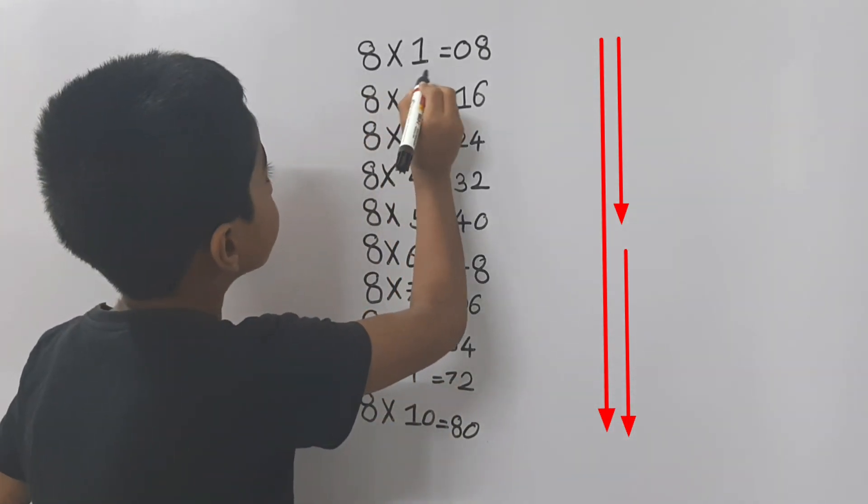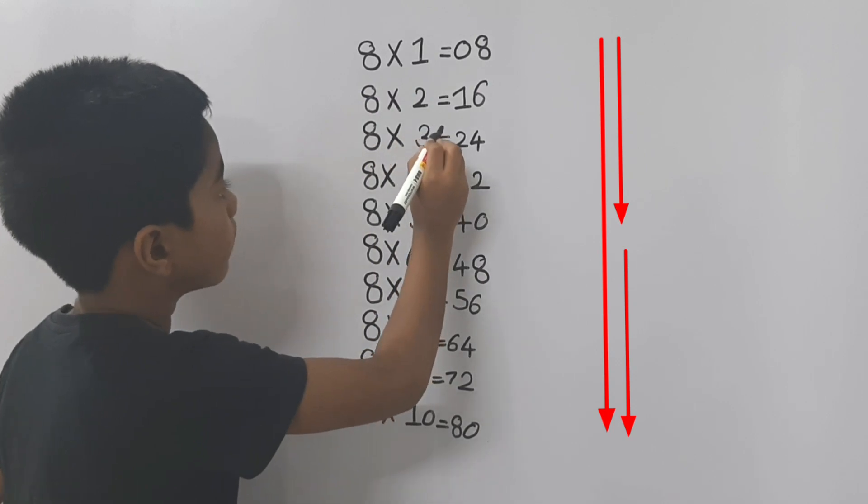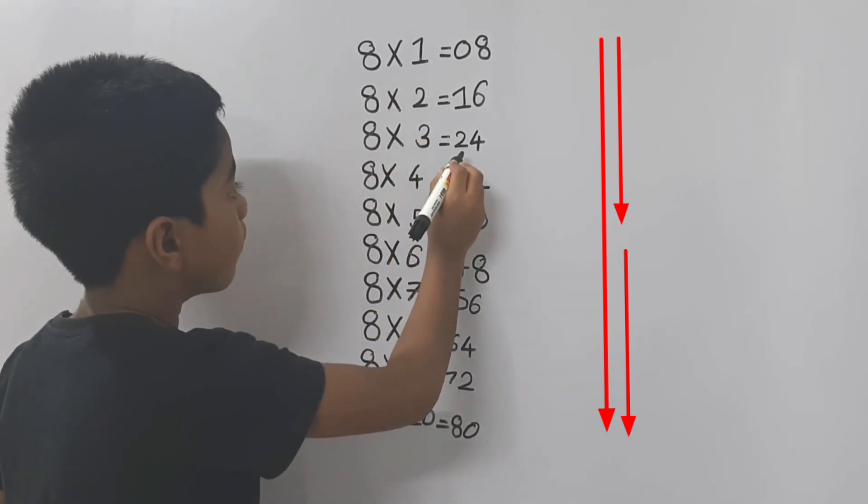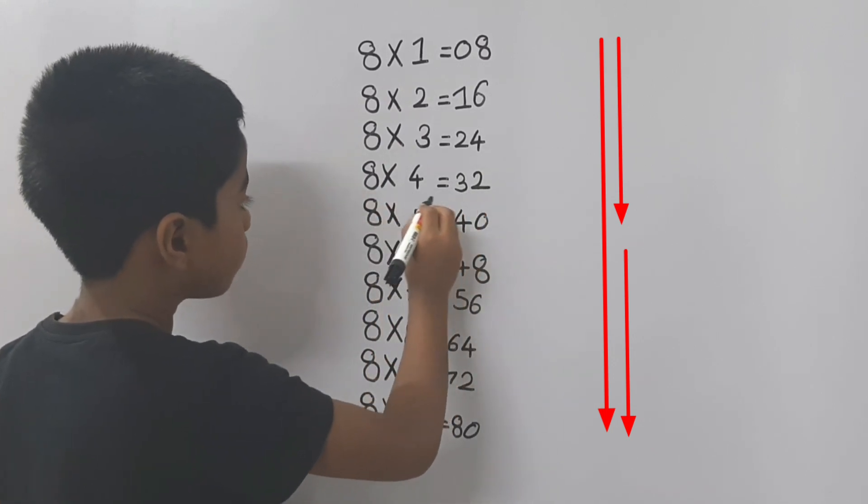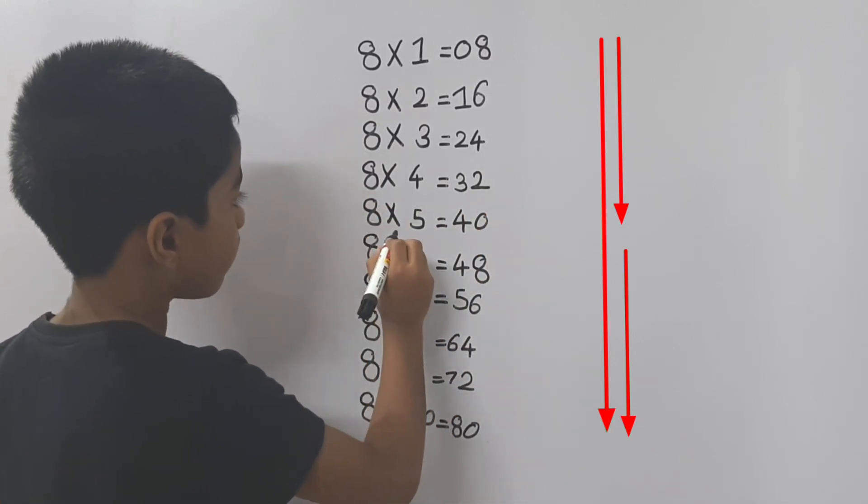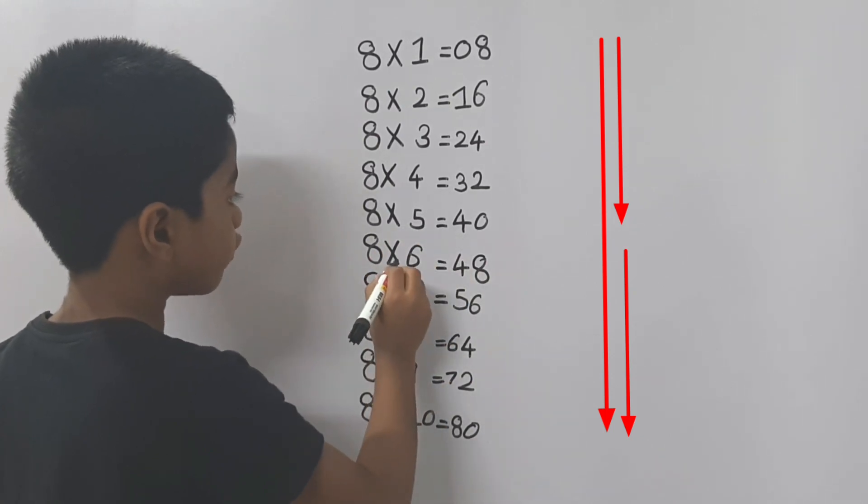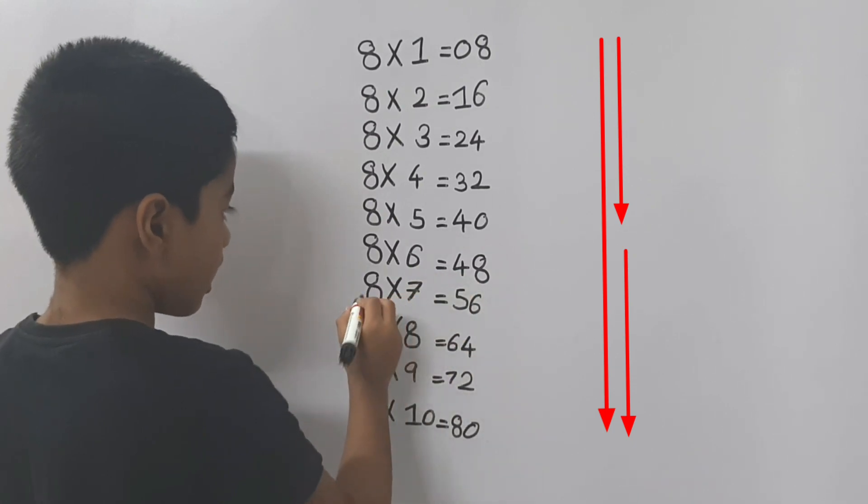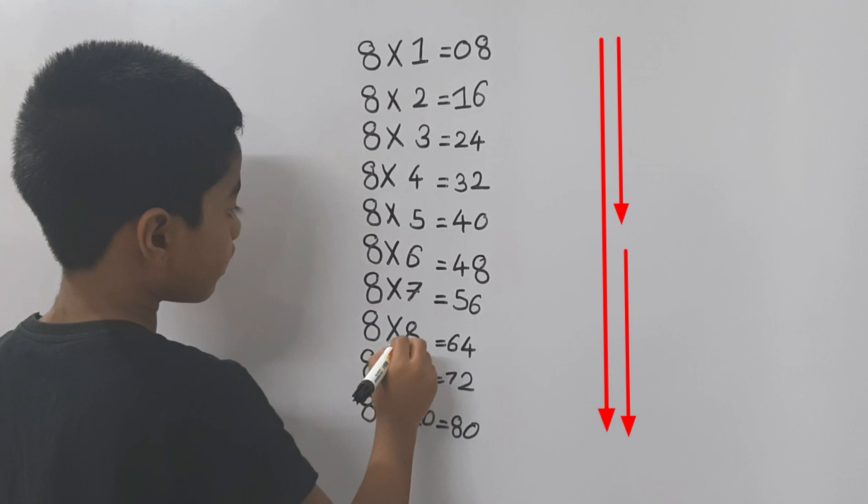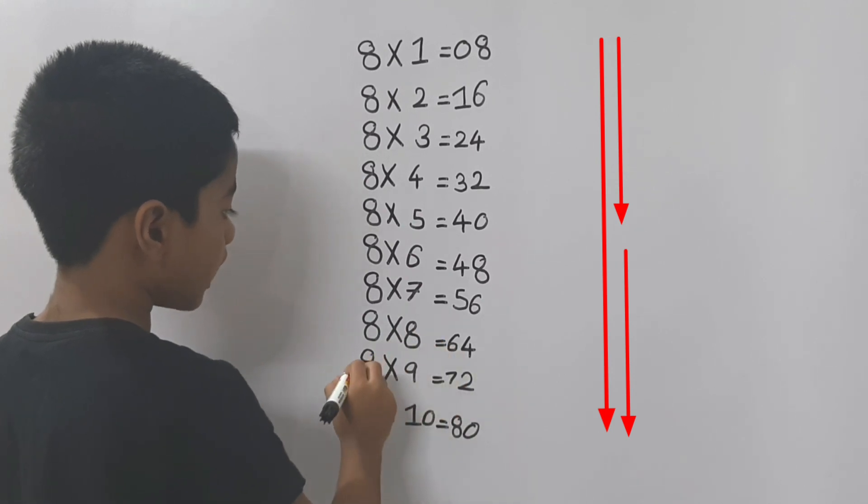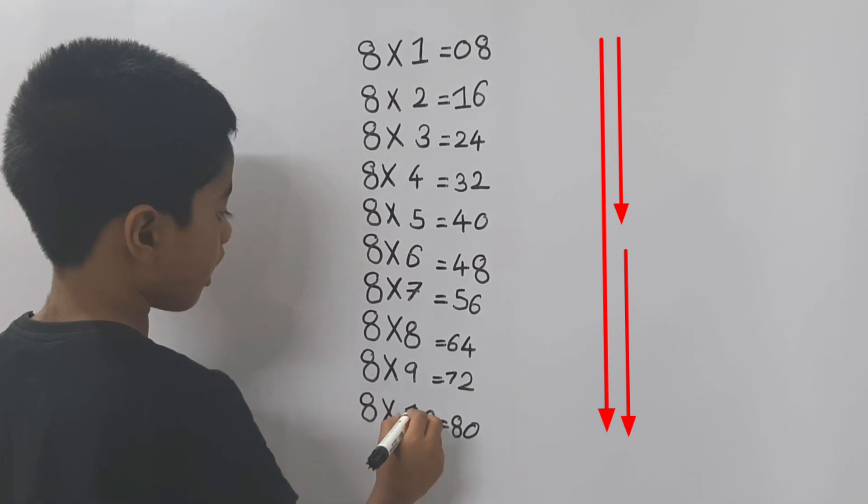8 times 1 equals 08, 8 times 2 equals 16, 8 times 3 equals 24, 8 times 4 equals 32, 8 times 5 equals 40, 8 times 6 equals 48, 8 times 7 equals 56, 8 times 8 equals 64, 8 times 9 equals 72, 8 times 10 equals 80.